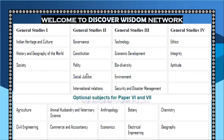Now, if we talk about the syllabus: GS Paper 1 covers Indian heritage and culture, history and geography of the world and India, and society-related factors. GS Paper 2 covers governance, constitution, politics, social justice, and international relations.